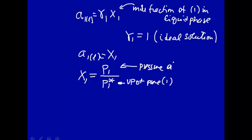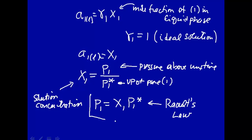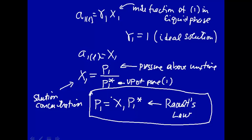So the mole fraction of one equals the pressure of one above the solution - which has two components - divided by the vapor pressure of pure component one. This is the actual partial pressure above the mixture. The solution concentration (mole fraction) governs the fraction of pressure in the vapor phase. Or rewriting: the pressure above a solution equals the mole fraction in the solution times the vapor pressure of the pure component. This is known as Raoult's Law. It is usually just given to you in introductory chemistry, but here we derived it using phase equilibrium.